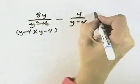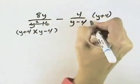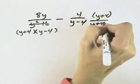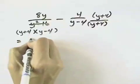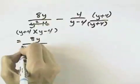But this fraction is missing the factor of y plus 4, so we're going to multiply the numerator and the denominator by y plus 4. When we do that, the first fraction remains the same.